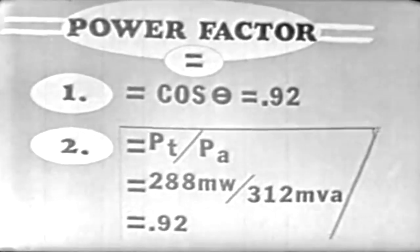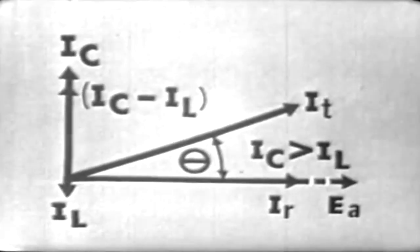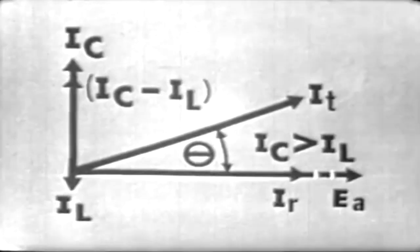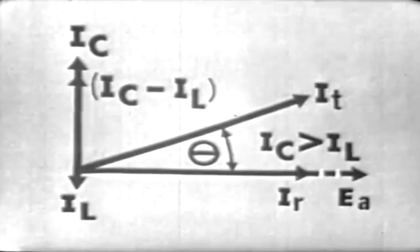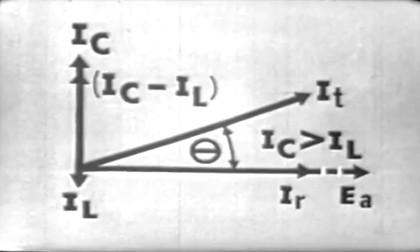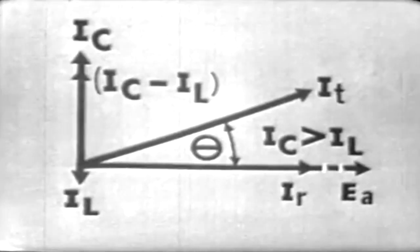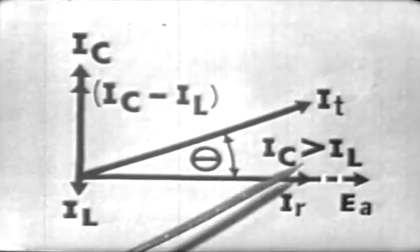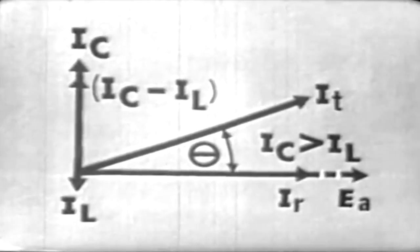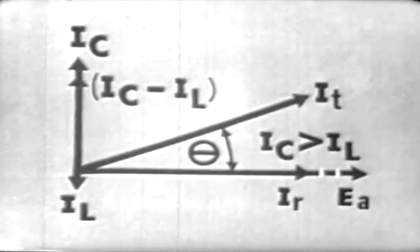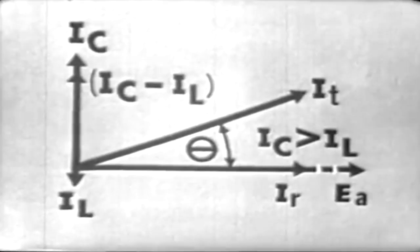Throughout the lesson, I have been using a circuit to obtain a resultant current vector where IC is greater in magnitude than IL. This being the case, our total current leads our applied voltage by the phase angle. IC would have to be greater than IL. With a condition such as this, our circuit is acting capacitively, because we have a leading phase angle.